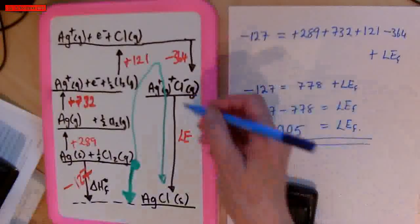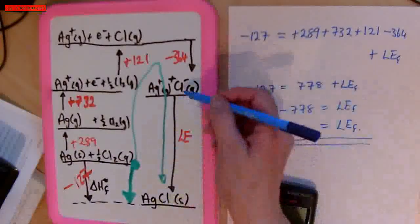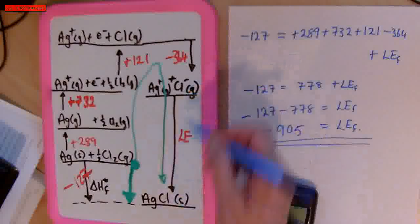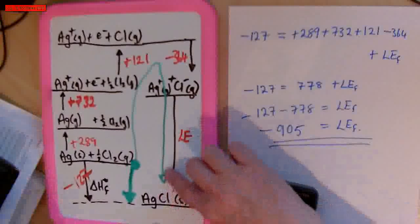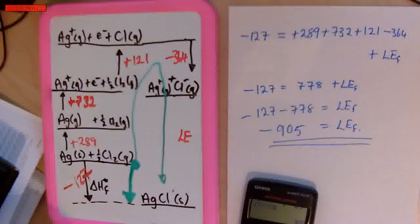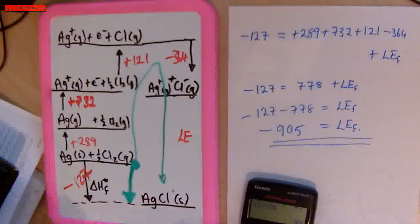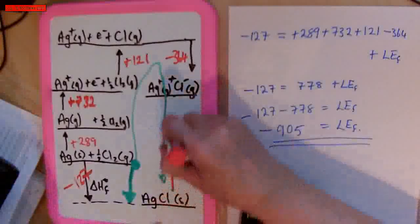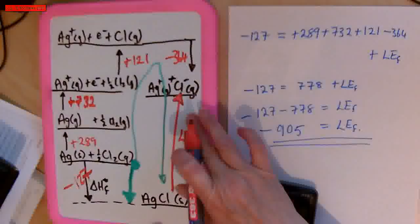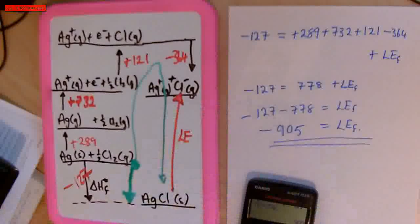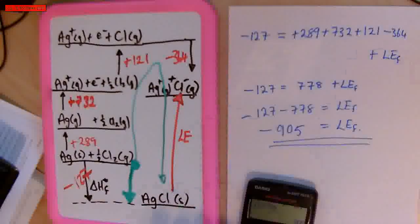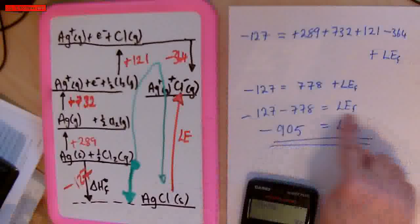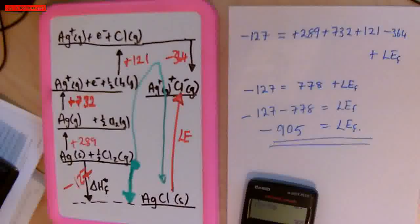But what would it be if this was the other way around? What if I wanted the lattice enthalpy of dissociation — how would that affect this equation and that number? I'll give you time to think about that.